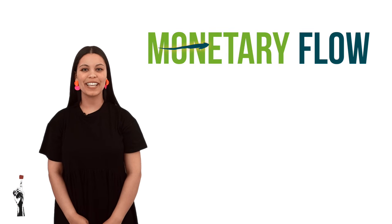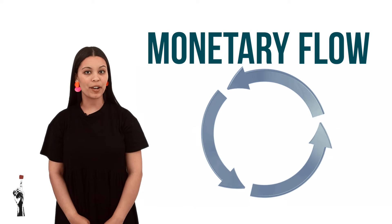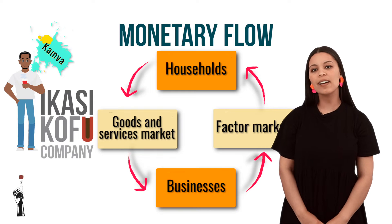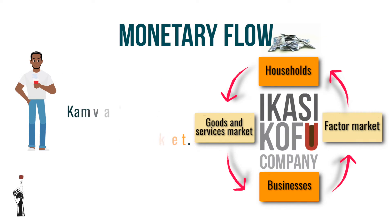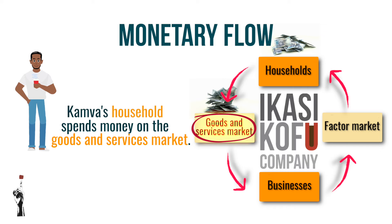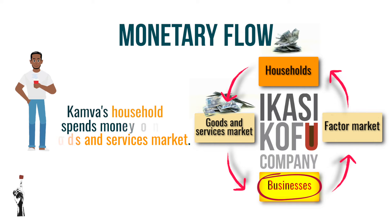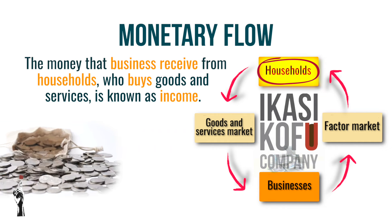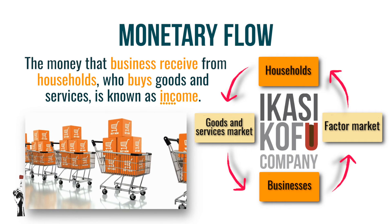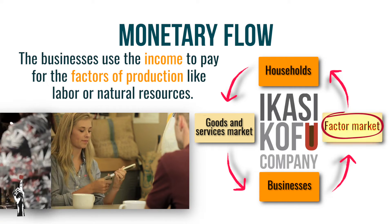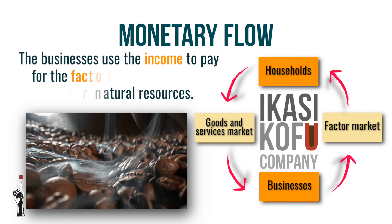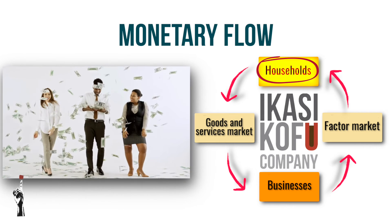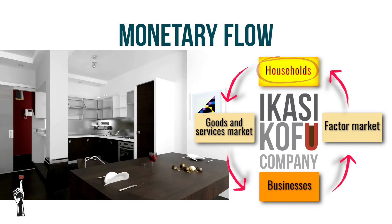The second circular flow is the monetary flow. This flow explains the direction of money which flows through the economy. Let's take Kamva and Ikasi Kofu Company as an example again. Kamva spends money on the goods market to buy goods and services that he needs from businesses. The money that businesses receive from households who buy goods and services is known as income. The businesses use this income to pay for the factors of production like labour or natural resources. The employees and owners of the business then receive income for their households in return for their factors of production.